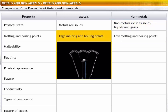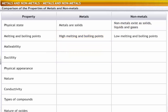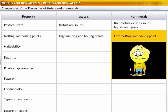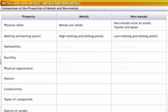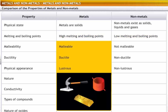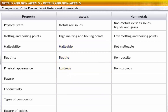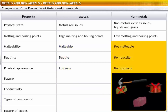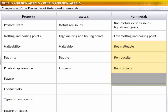Metals have very high melting and boiling points, unlike non-metals. Most metals are malleable, ductile and lustrous, while non-metals are not.